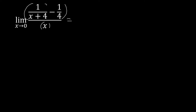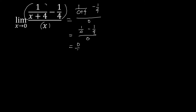Substituting x with 0: 1 over (0 plus 4) minus 1 fourth, all over 0. So we have 1 over 4 minus 1 fourth over 0. This is still a 0 over 0, which is indeterminate. So we are going to manipulate our function and come up with a single fraction.